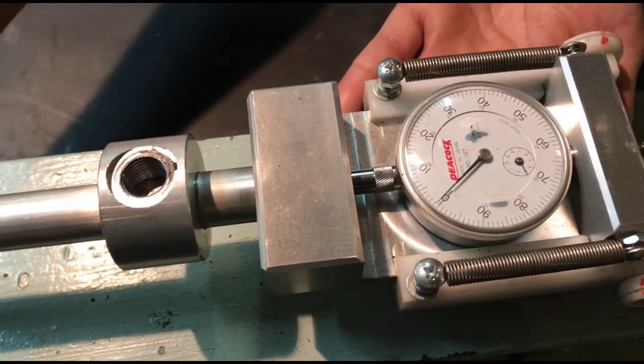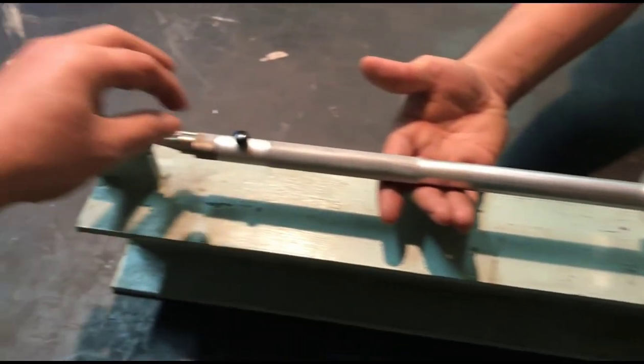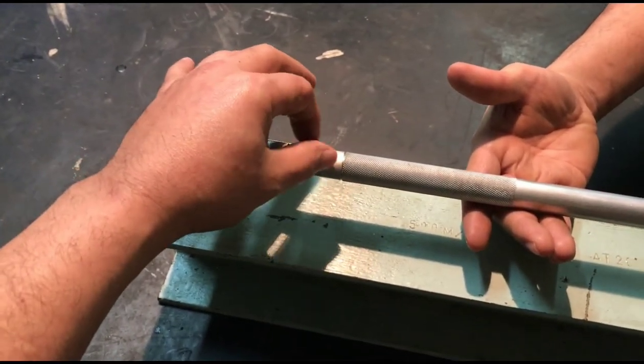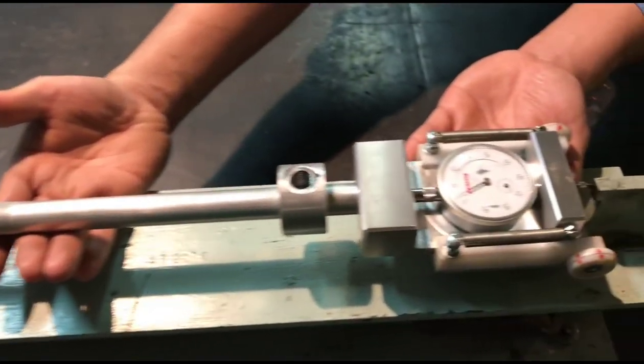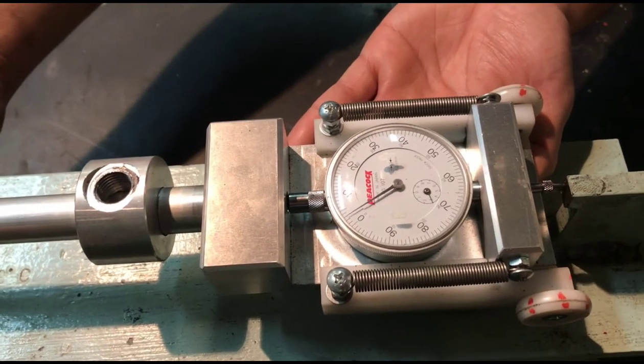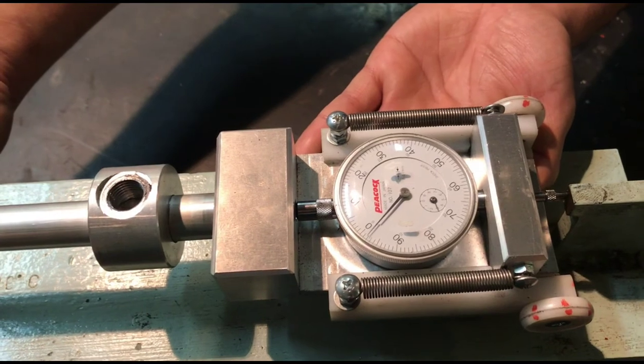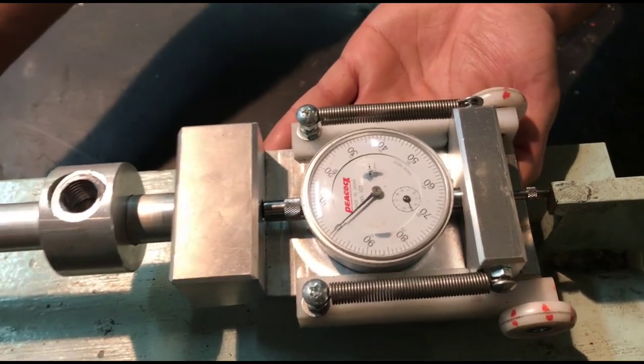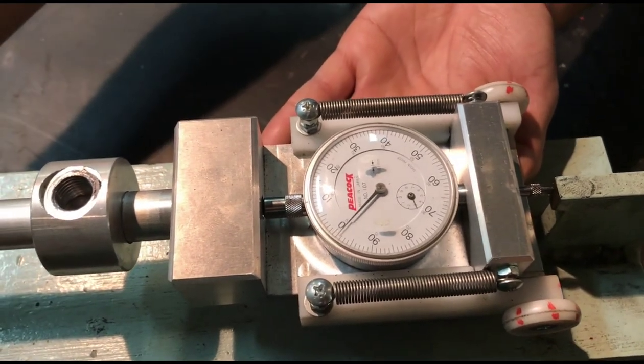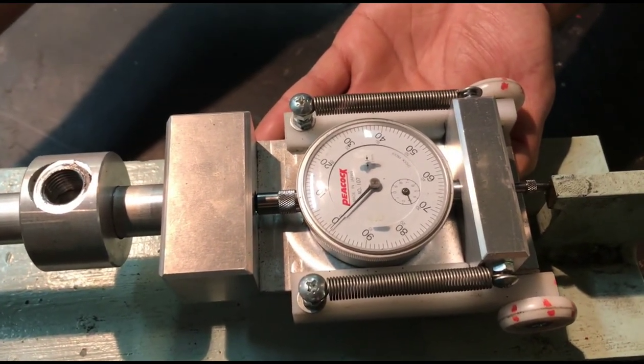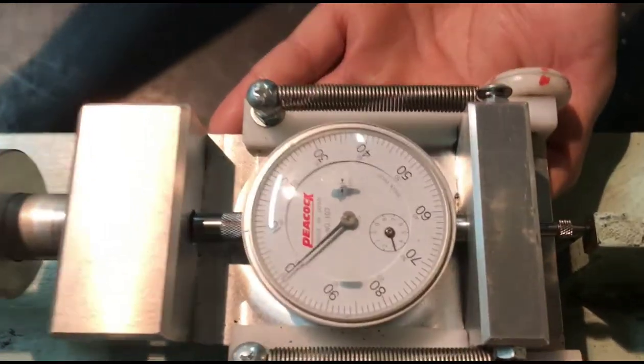Double check, then after you have to lock the adjusting knob. If you forget to lock the adjusting knob, an error will occur during measurement. Double check again it's at zero and then lock the adjusting knob.